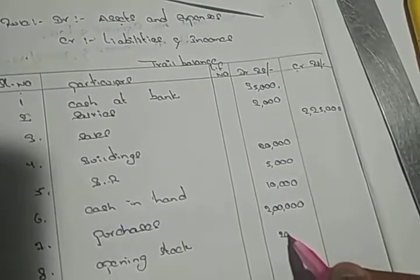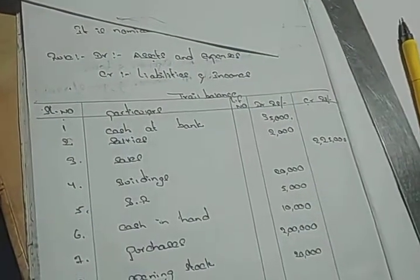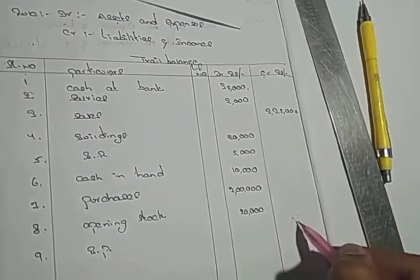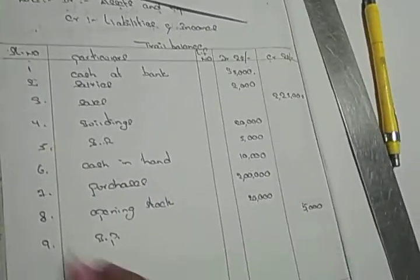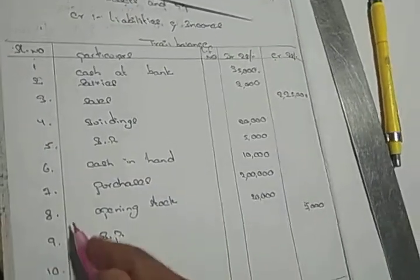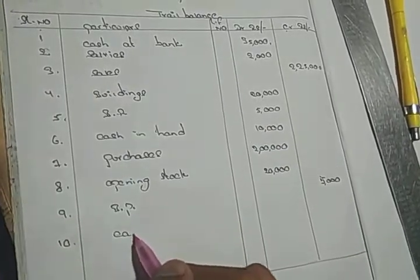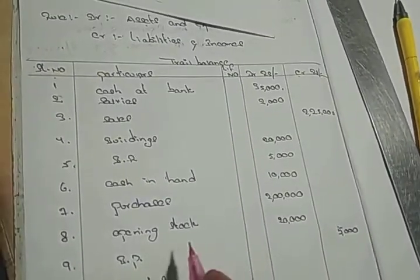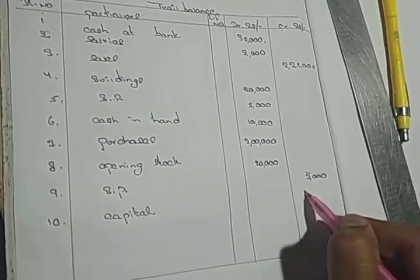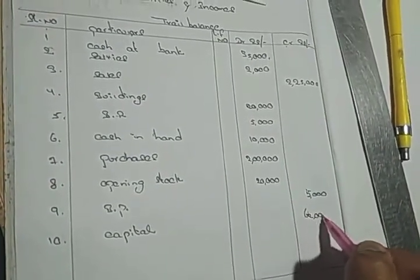Next, bills payable. Bills payable: one type of liability. Bills payable, credit. Next, tenth: capital. Capital: one type of income, credit.